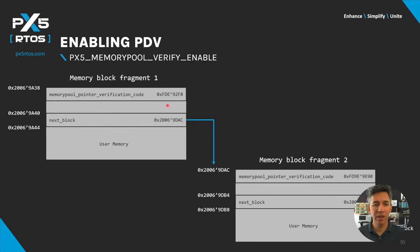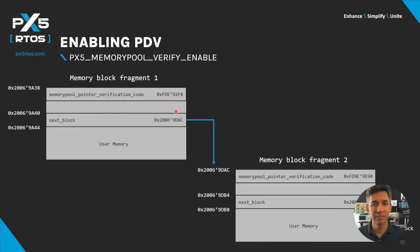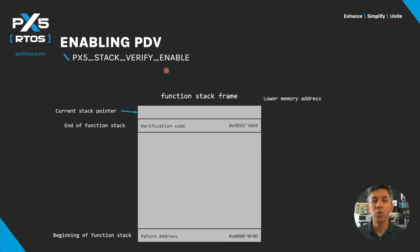Before the next block is used, a new verification code is computed and compared against the stored value. If they match, processing continues normally; if there is a mismatch, the central error handling is called. When the application frees memory, both the block being freed and the immediately following block are verified.